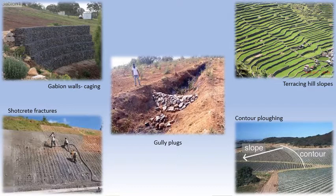The last preventive measure is contour plowing — plowing along the contour rather than across it. Contour refers to the altitude of a mountain or slope. If you plow from one contour to another across the slope, you make the soil loose and allow it to slide down. But if you plow along the contour — for example, plowing all along 100 meters height, then 200 meters — you avoid loosening the slope. Contour plowing should be done only along the contours and not across them.